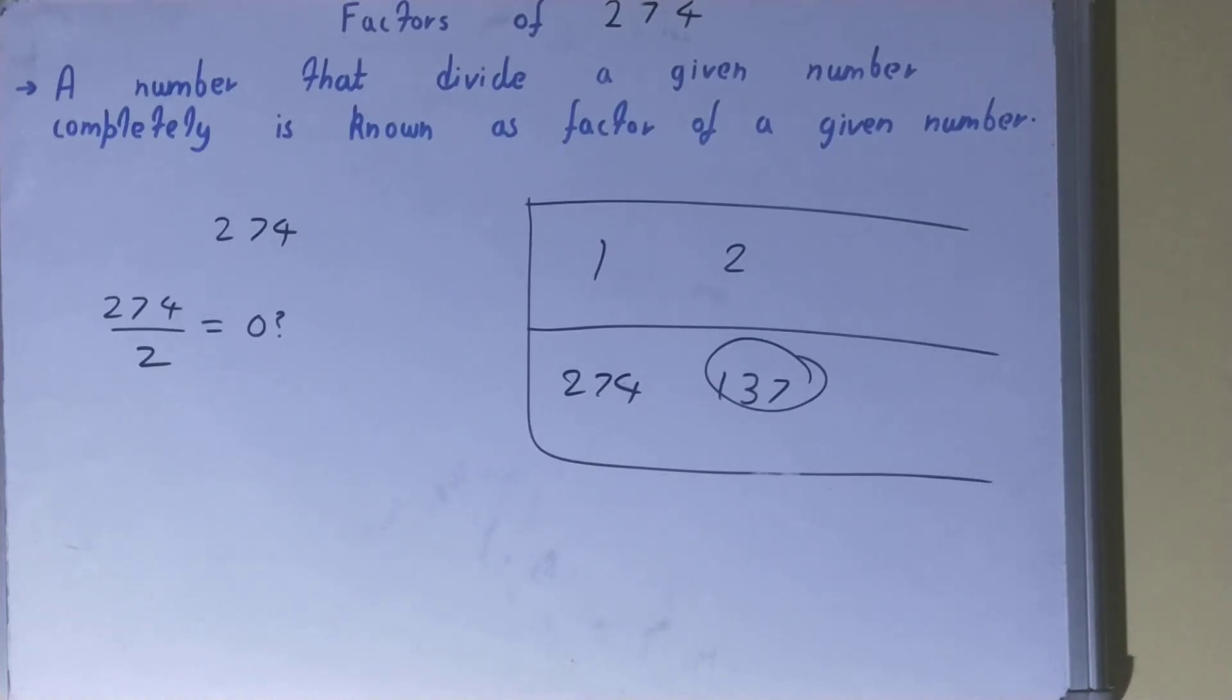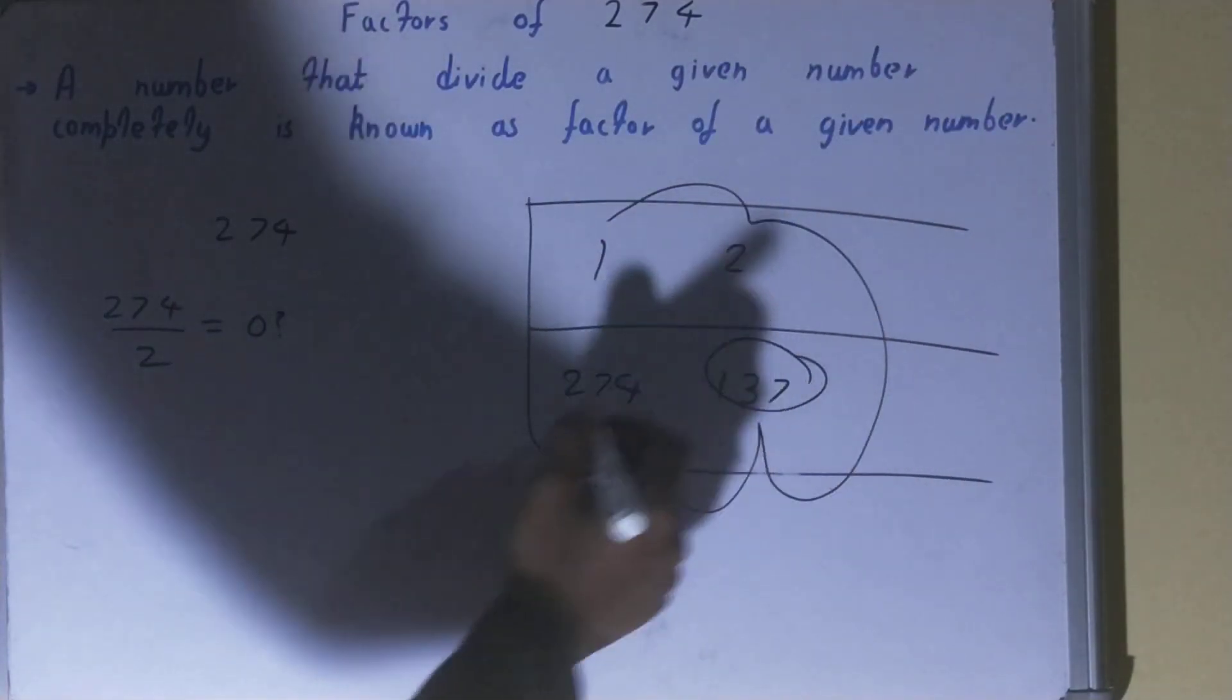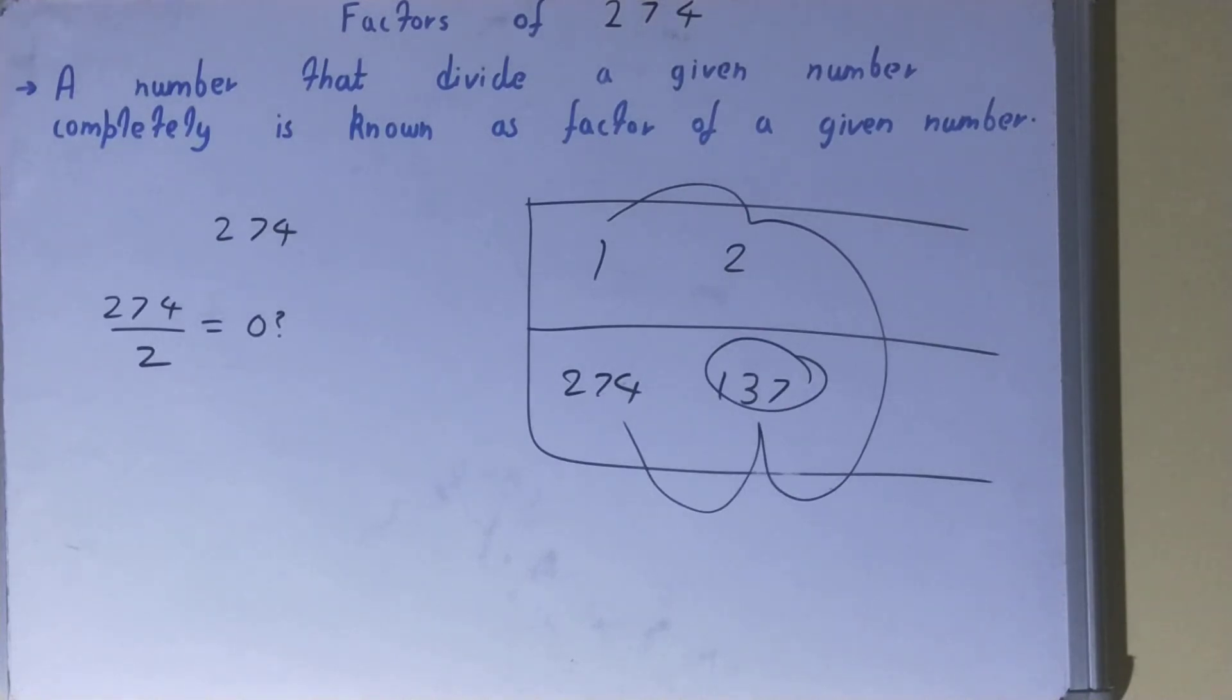You don't need to check any further, and the set of factors for the number 274 will be one, two, 137, and 274. So this was all about factors of the number 274.